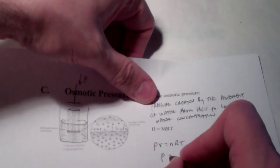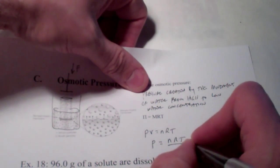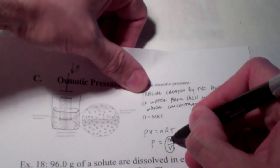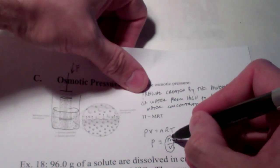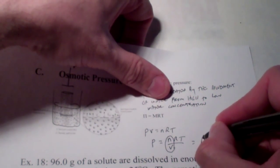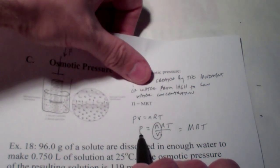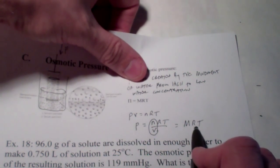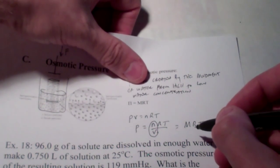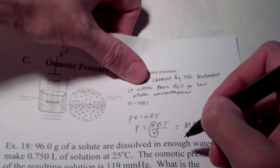If I solved that for P, I would get NRT over V. Now, N over V is moles over liters. Guess what moles over liters is the same as? You guessed it, molarity. So, the pressure of a gas is the molarity of that gas times RT. And I claim that particles dissolved in water behave similar to particles of a gas in a container.